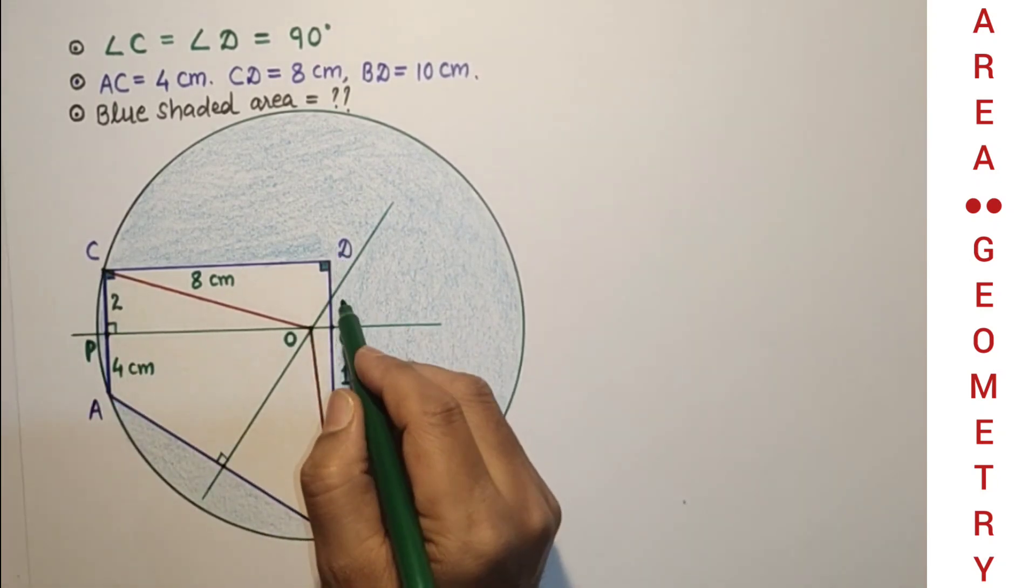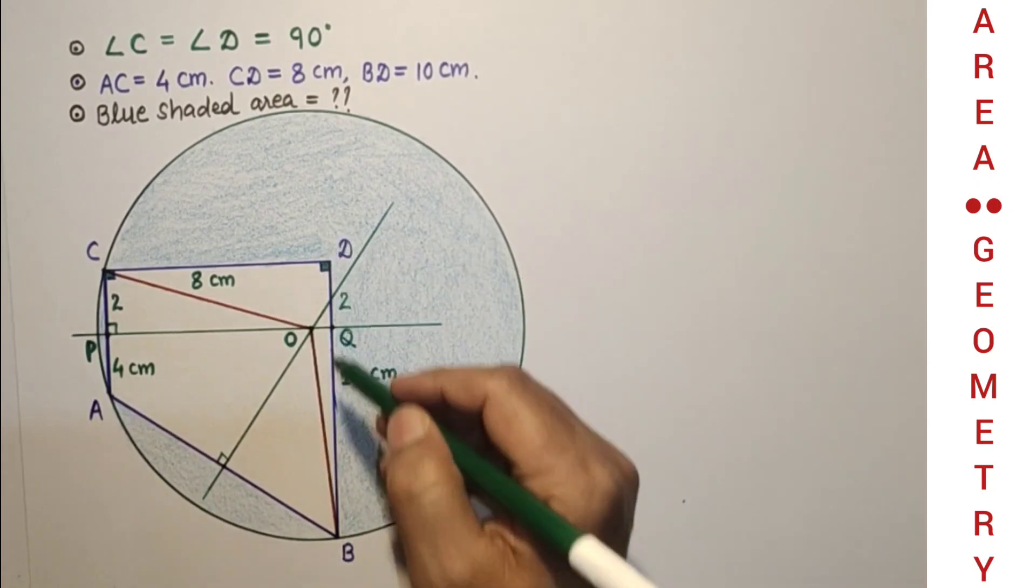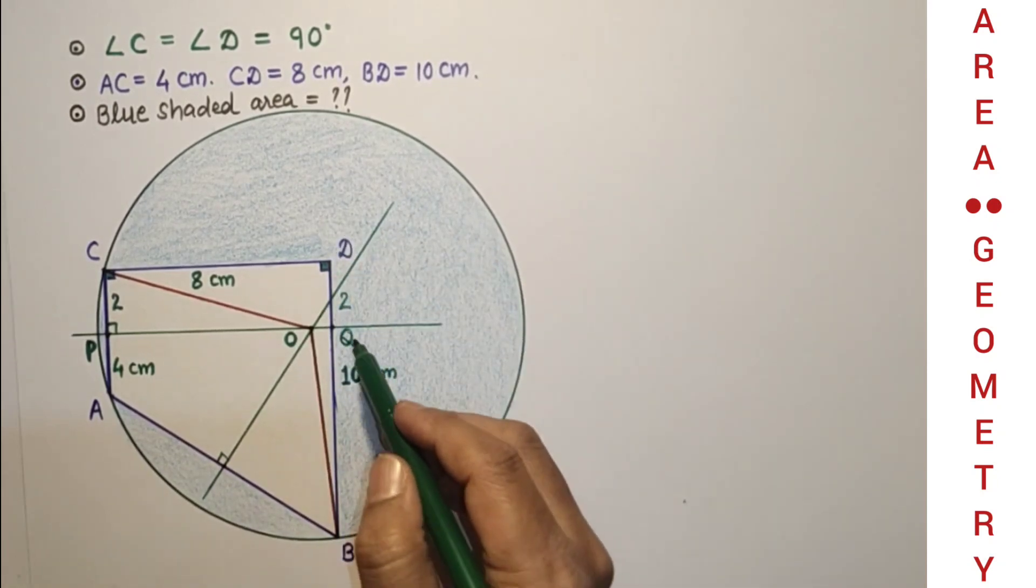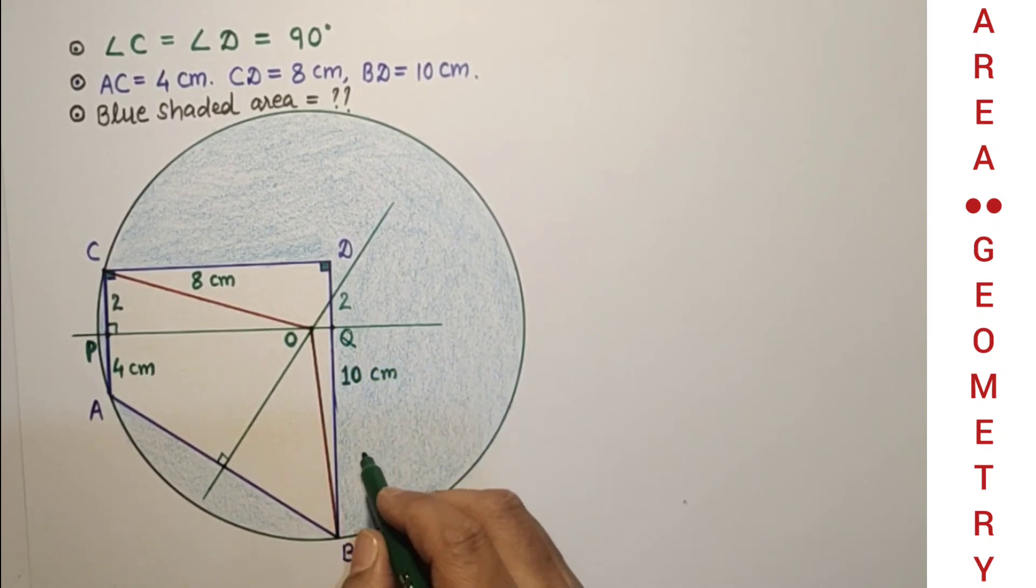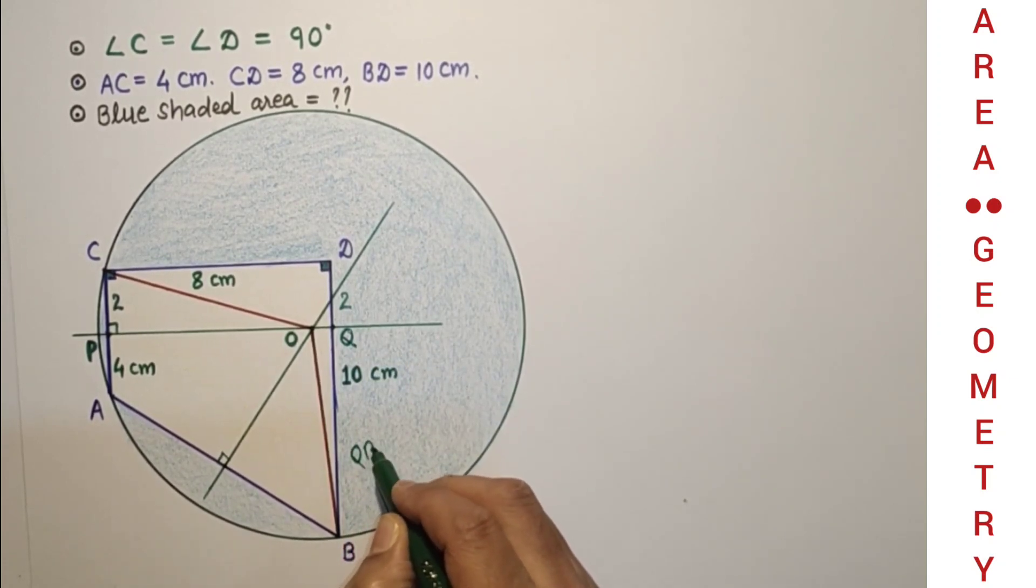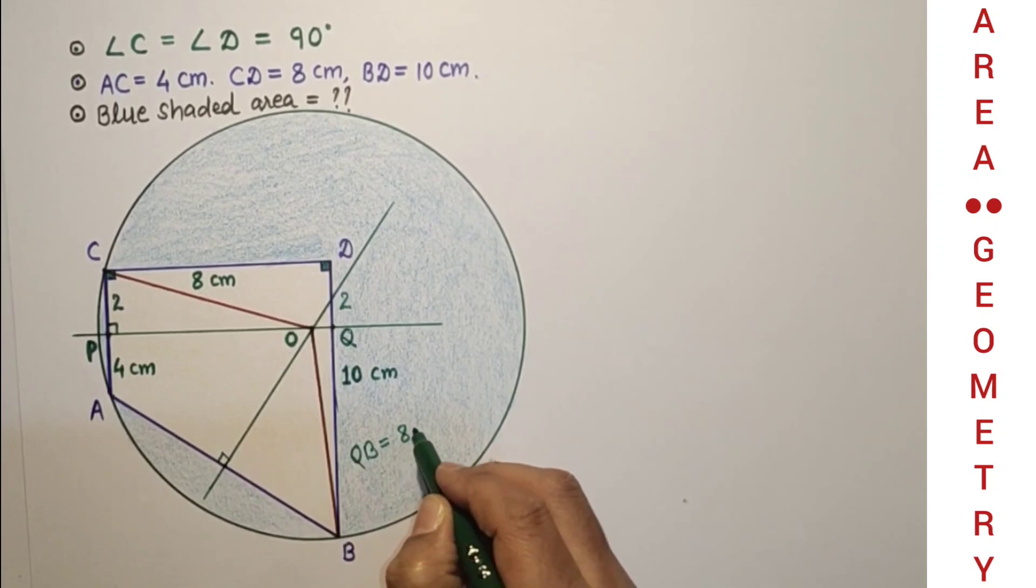So this QD is 2 and this DB full length is 10 cm, so only QB is 10 minus 2 which is 8. So QB is equal to 8 cm.